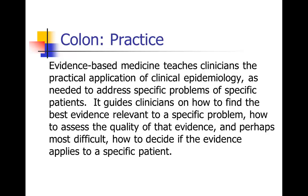Another thing to notice is that the second sentence is actually a list: how to find the best evidence, how to assess the quality, how to decide if the evidence applies. So you've got a list here. And as I mentioned, a colon is a good way to set up a list, so perhaps we can use the colon here to set up that list and draw this all into a single sentence.